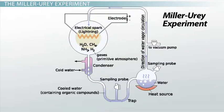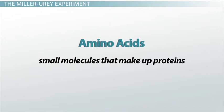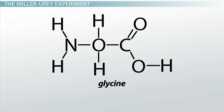Within one day, the solution in the flask had developed a pinkish hue. By the end of the experiment, Miller and Urey identified many new compounds that formed in the apparatus. These included several different types of amino acids, the small molecules that make up proteins, as well as simple carbohydrates. Glycine, a simple amino acid, was the first compound to emerge from the experiment.